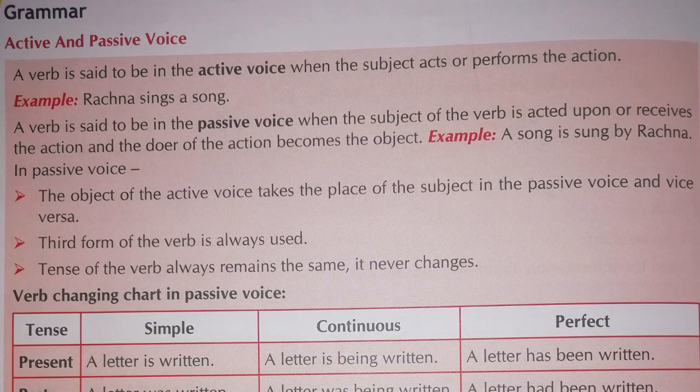Active voice: a verb is said to be in the active voice when the subject acts or performs the action. So in active voice, the subject performs the action — for example, 'Rachna sings a song.' Here Rachna is your subject and 'a song' is the object.